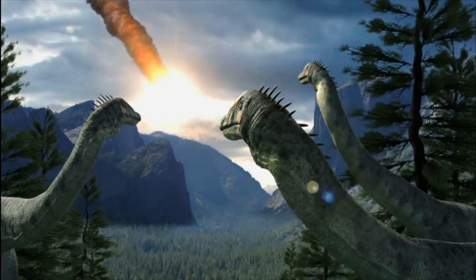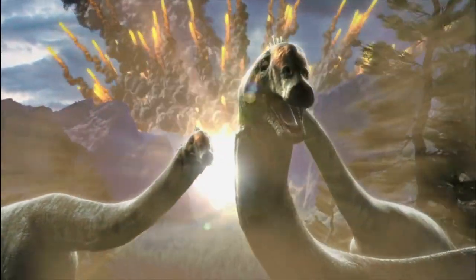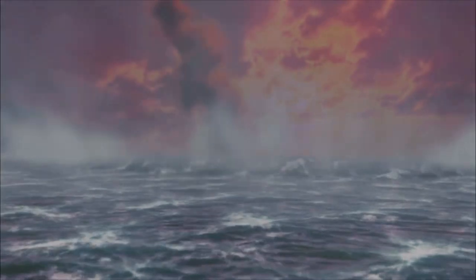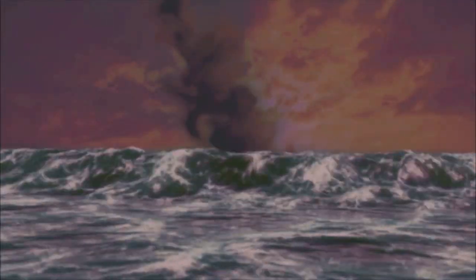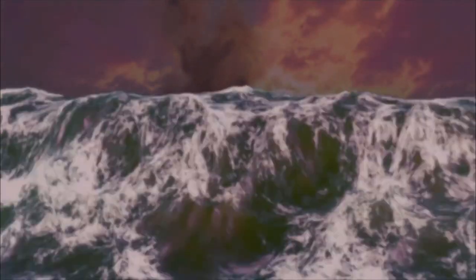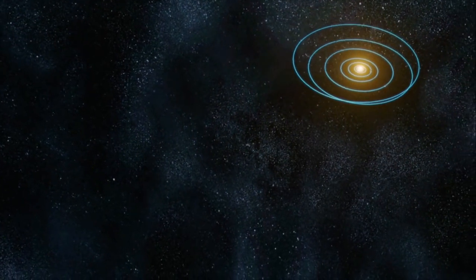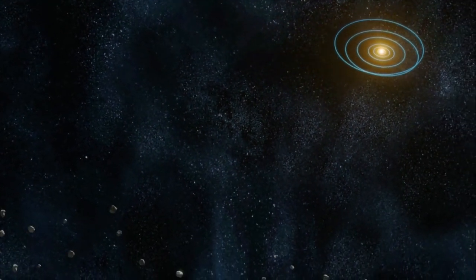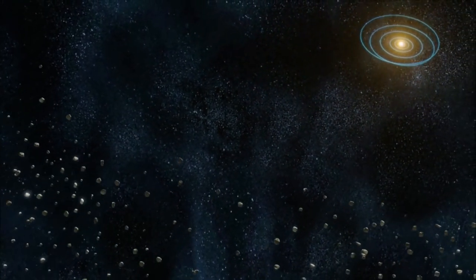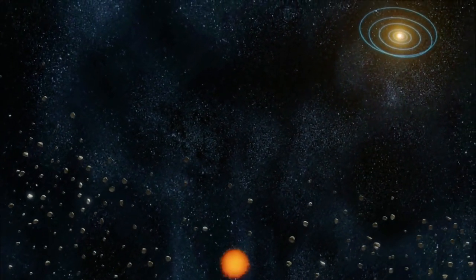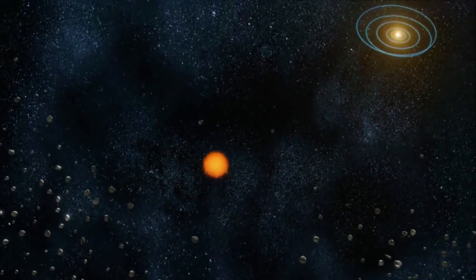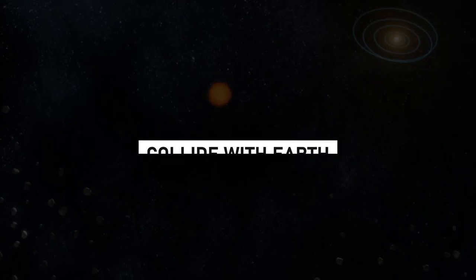The theory of Nemesis was proposed to explain extinction events, times in Earth's history where there was a significant loss of biodiversity. The idea was that Nemesis, as it orbited the sun, would periodically disturb the comets and asteroids in the outer solar system, causing them to fall towards the inner solar system and collide with Earth.